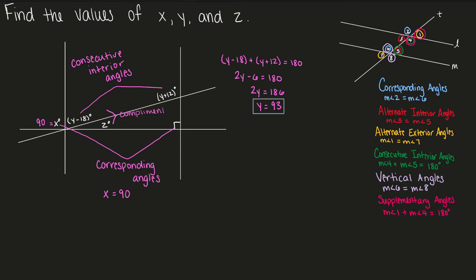Y minus 18 and z are complementary angles. Since x equals 90, the entire angle on the other side of x is also 90 degrees. Therefore, y − 18 and z must add up to 90 degrees. So: y − 18 + z = 90. With y = 93: 93 − 18 + z = 90, so 75 + z = 90. Subtract 75 from both sides, and z equals 15.